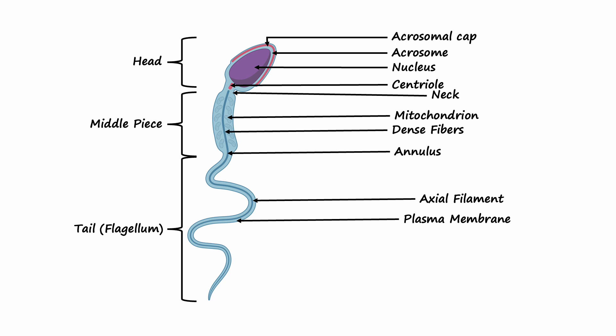Each part of the sperm cell plays a vital role in its journey to fertilize the egg. The head carries the genetic material, the neck provides structural support, the middle piece generates energy, and the tail propels the cell forward. Together, these components make the sperm cell a remarkable example of biological engineering.